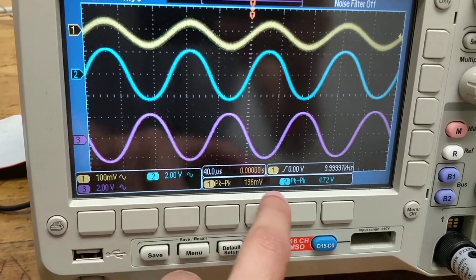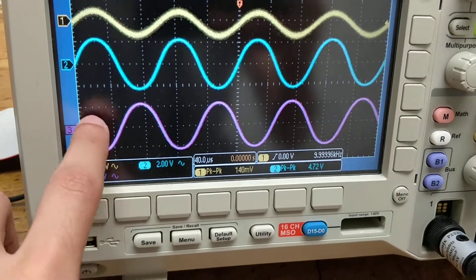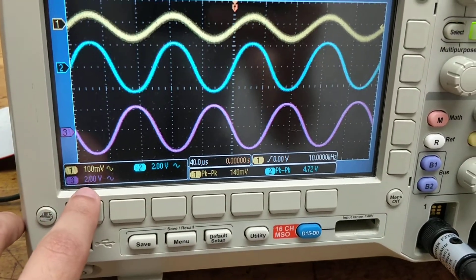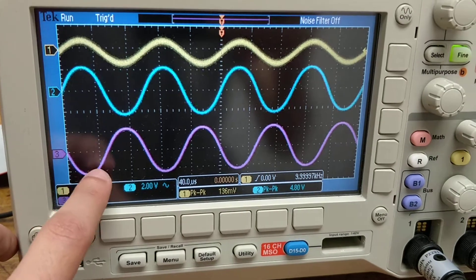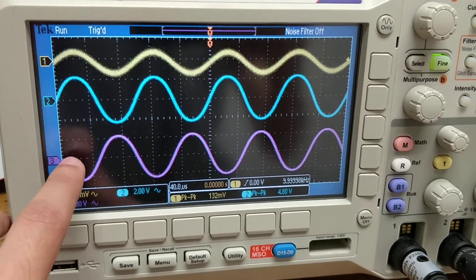They have the same amplitude. You can tell by the volts here. Each of these boxes is 2 volts per division. So we can see that channel 2 and 3 have a phase shift of 180 degrees.